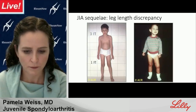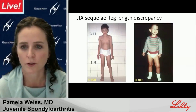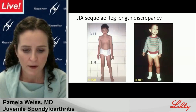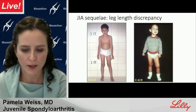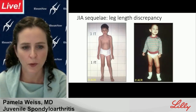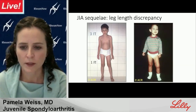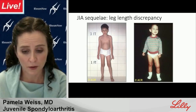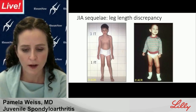Leg length discrepancy is also something we evaluate for longitudinally. When there is prolonged asymmetric involvement of, say, one knee, the inflammation actually feeds the growth plate and the involved leg grows faster and longer. The leg length discrepancy can be quite significant. Ultimately, the growth plate on the previously affected leg can close earlier and the leg may end up shorter. Surgical corrections exist, and for minor asymmetry shoe lifts can help, but it's best to treat early and avoid this complication.